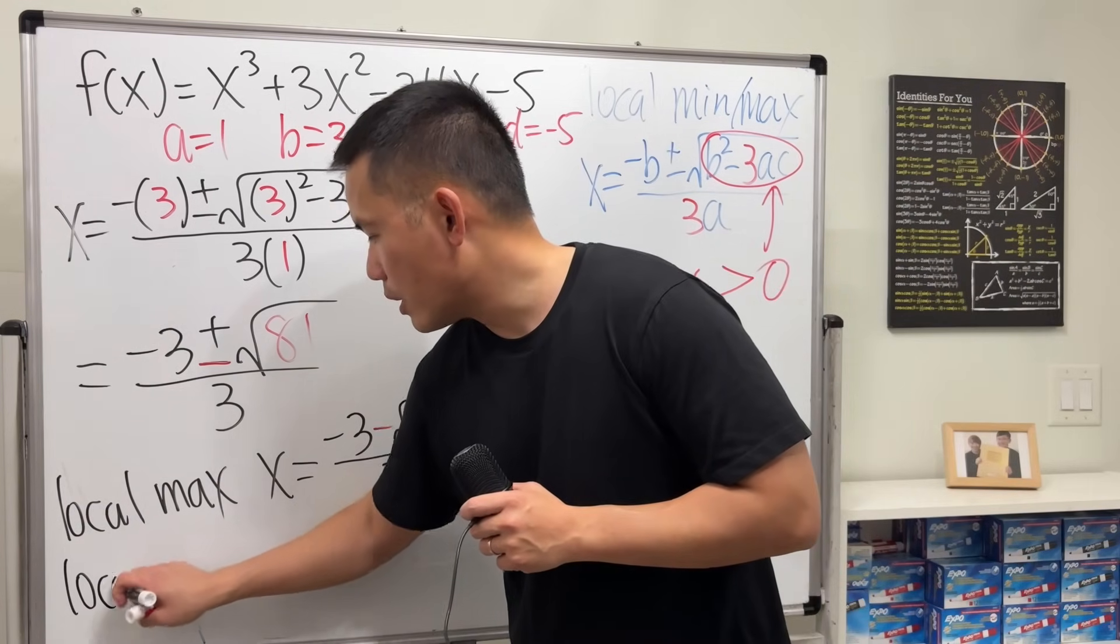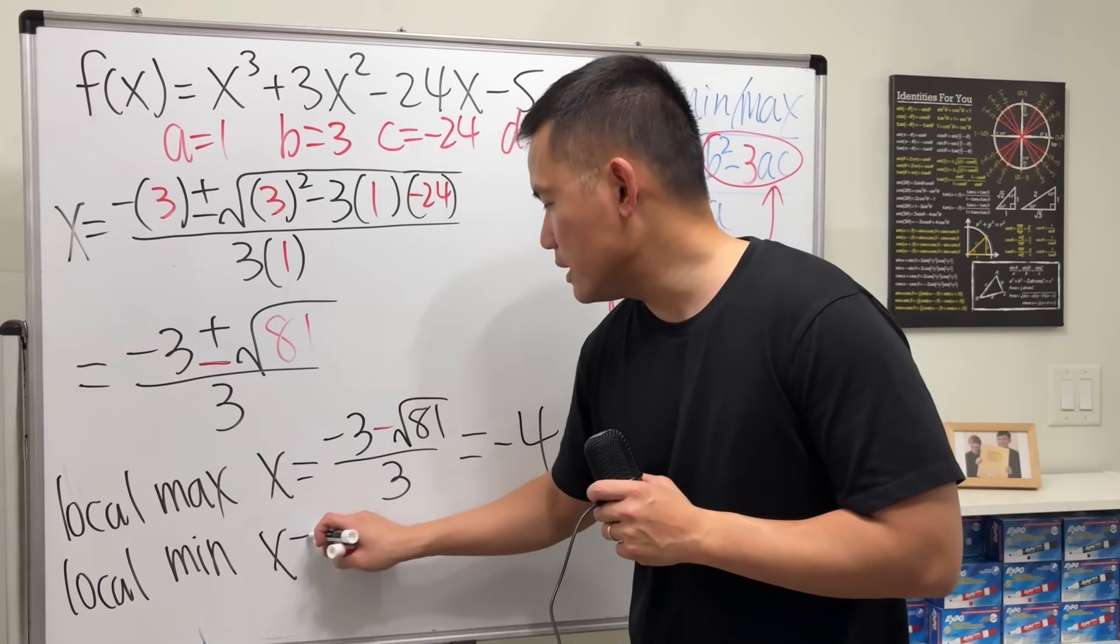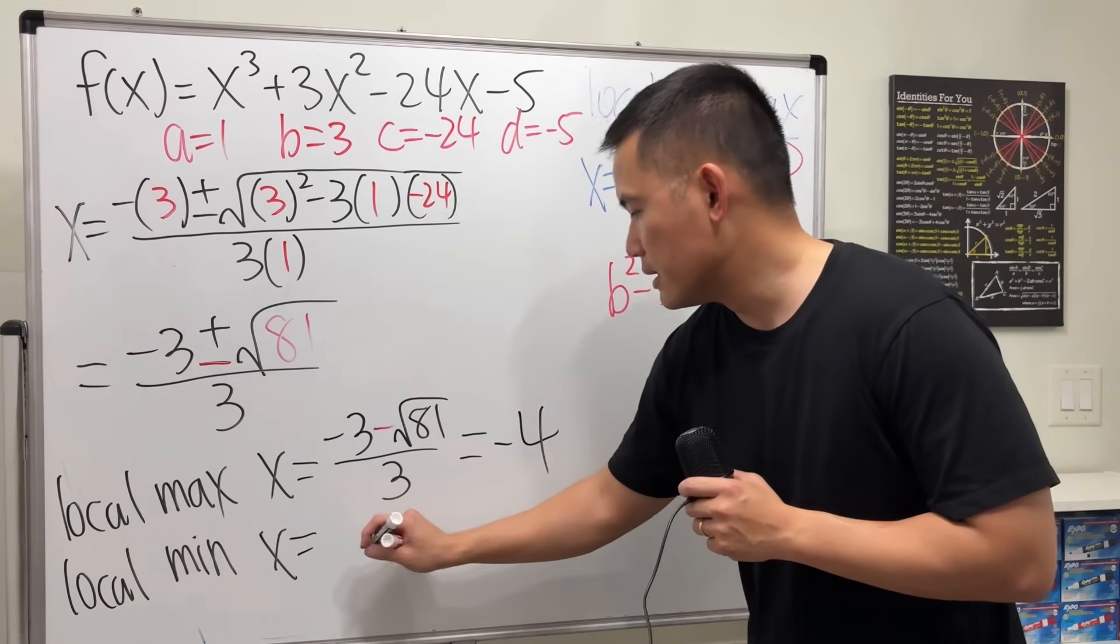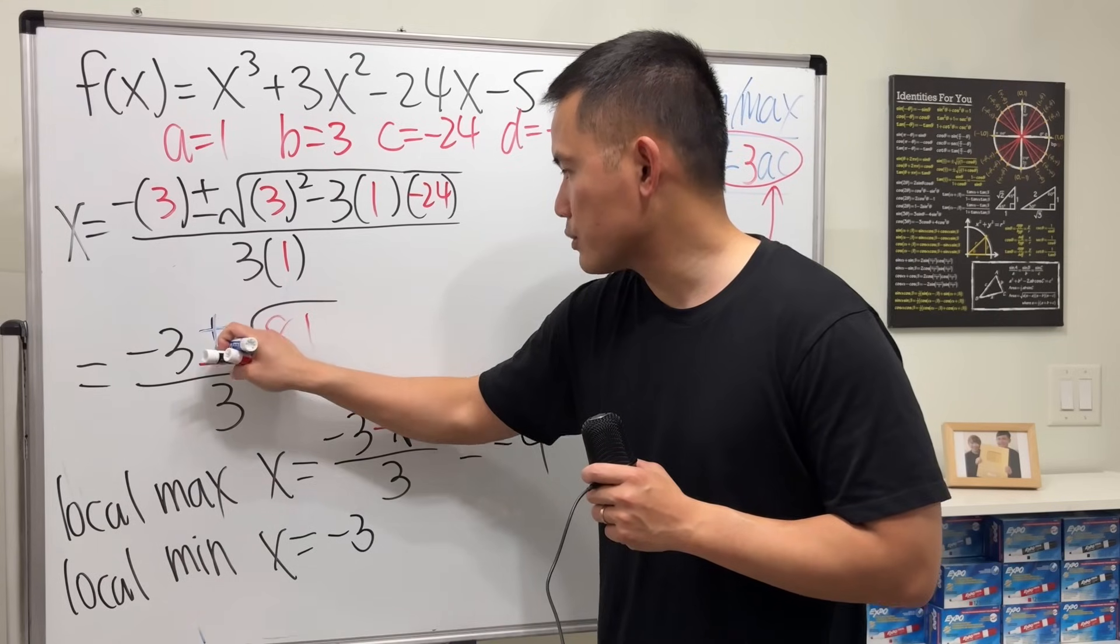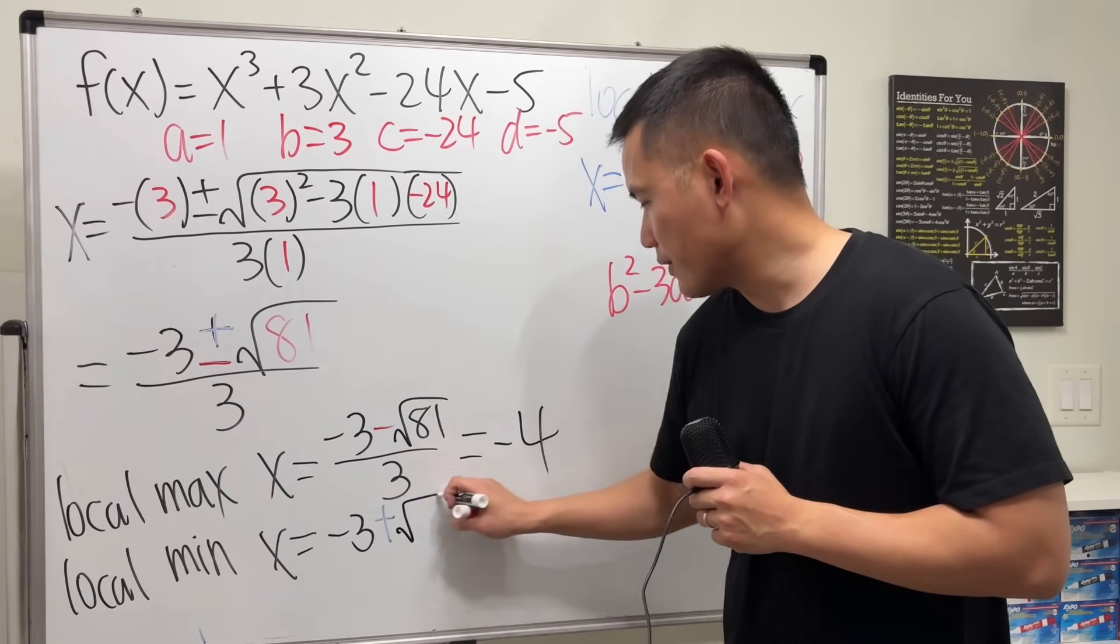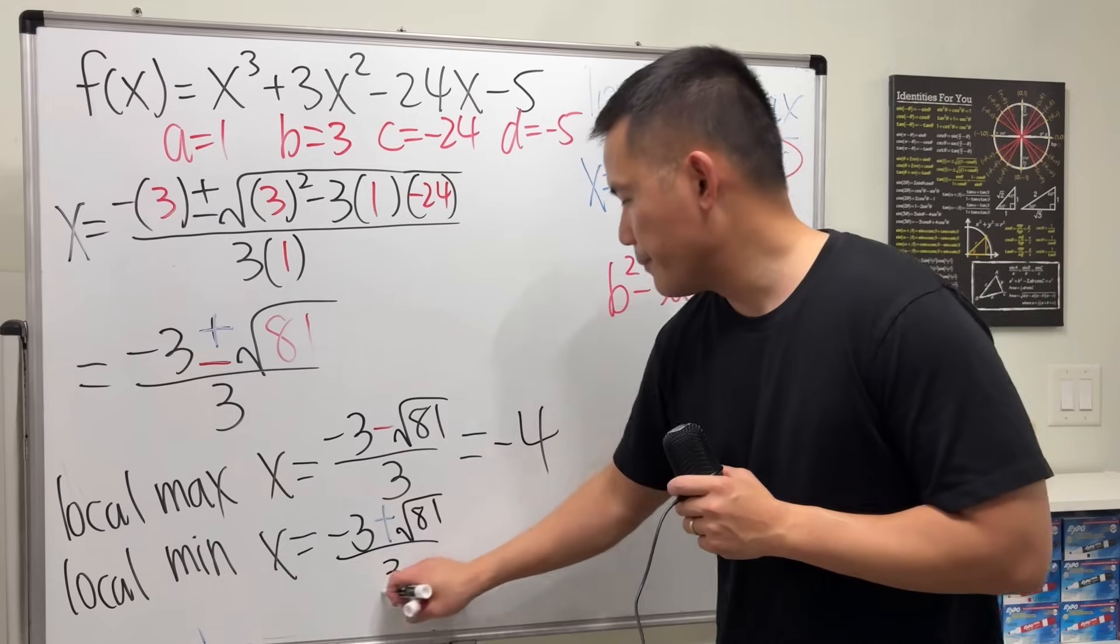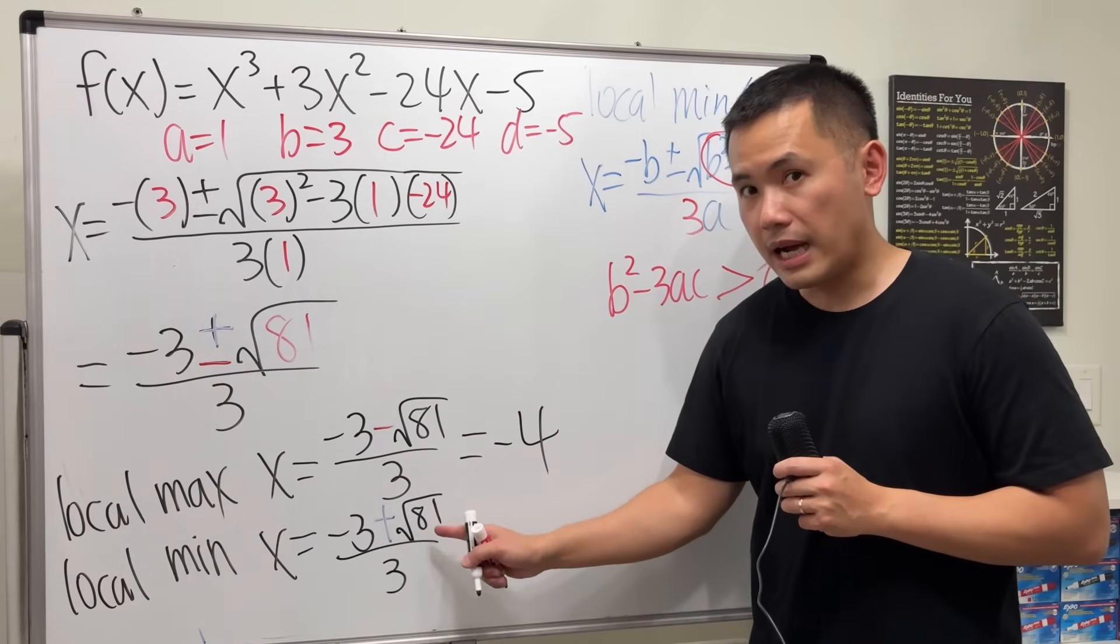On the other hand, the local minimum will always be at x equals the one with the plus: negative 3 and then let's emphasize the plus right here, and then square root of 81 over 3. That's negative 3 plus 9, which is 6, divided by 3. We have this at 2.